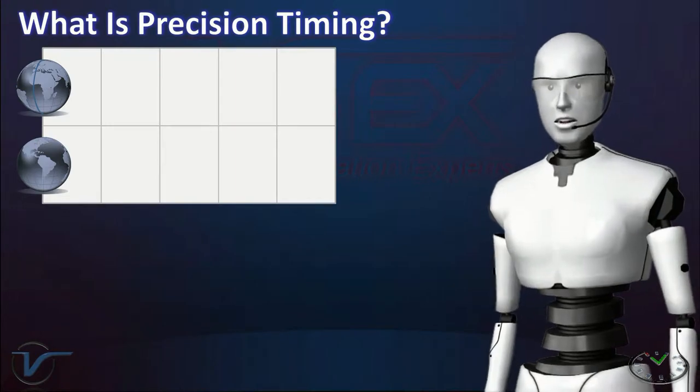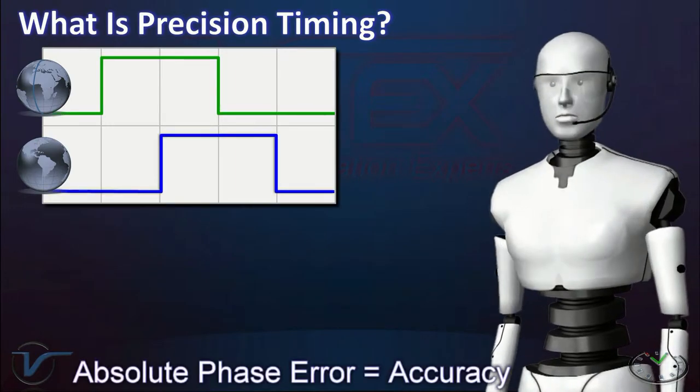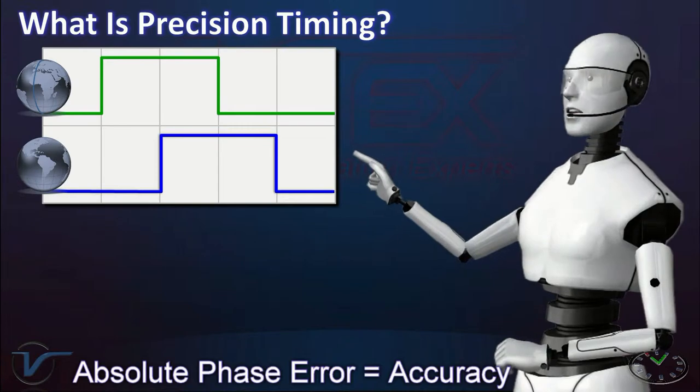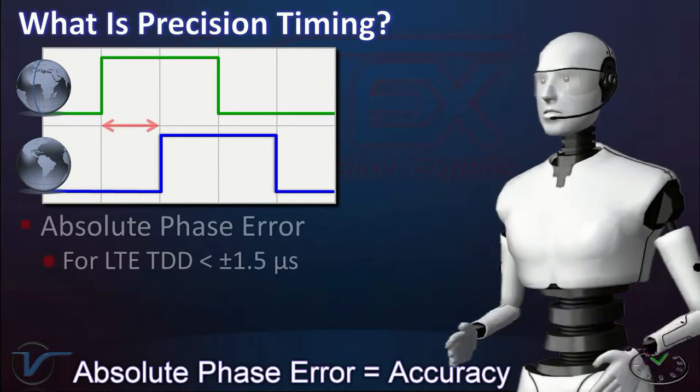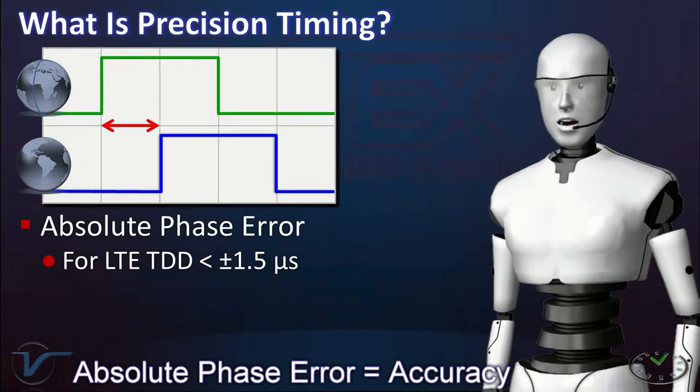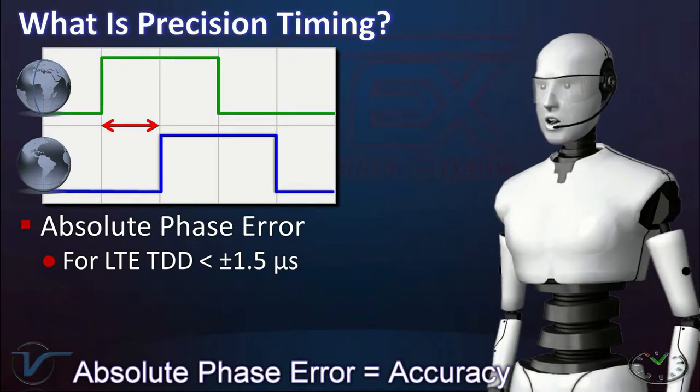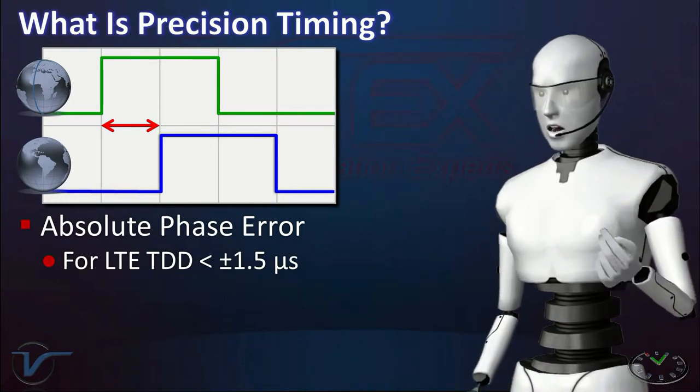Precision timing signals must be very accurate and stable. If a pulse happens to be late compared to its ideal position, that amount of delay is called absolute time error, or absolute phase error, which is measured in nanoseconds. The smaller the error, the more accurate the timing is.